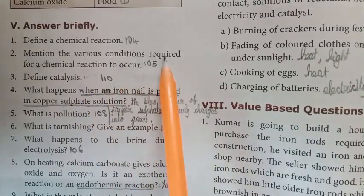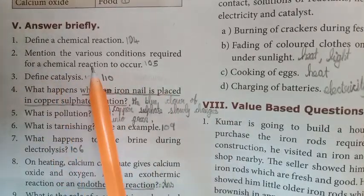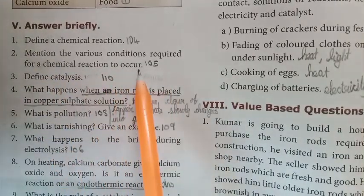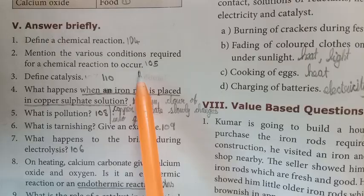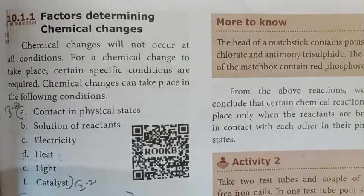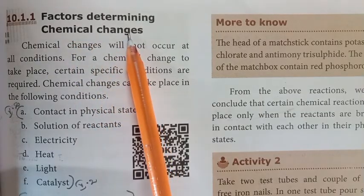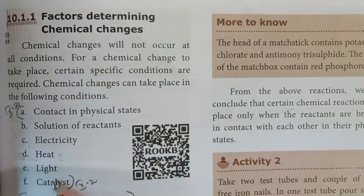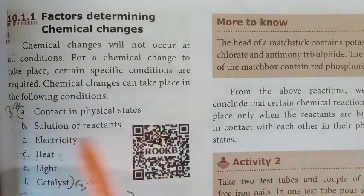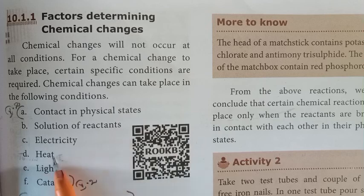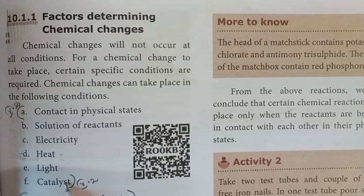Next question: mention various conditions required for chemical reactions to occur. Answer from page number 105, under the heading 'Factors Determining Chemical Changes' — six points: contact and physical state, solutions of reactants, electricity, heat, light, and catalyst.